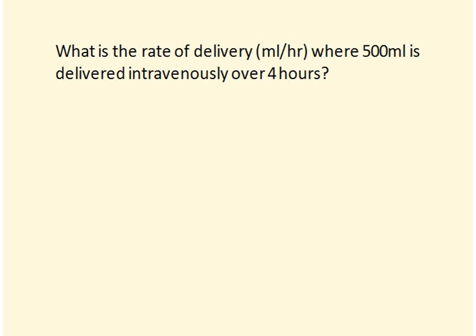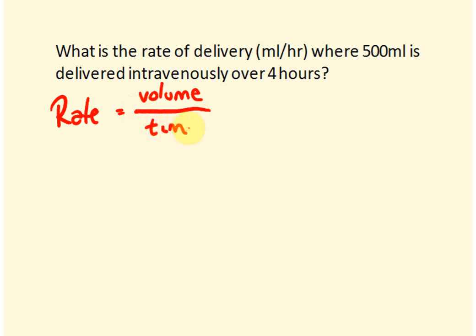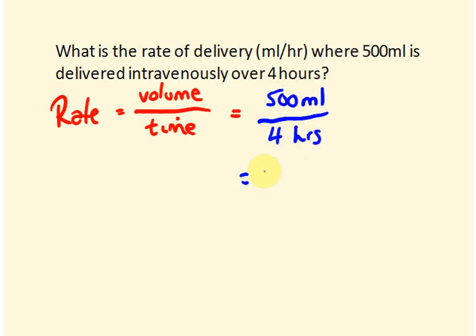Let's start some basic calculations. Work out the rate of delivery in mils per hour where 500 mils is to be delivered intravenously over 4 hours. Using the formula: Rate = Volume (in mils) / Time (in hours). So 500 divided by 4 gives a delivery rate of 125 mils per hour.